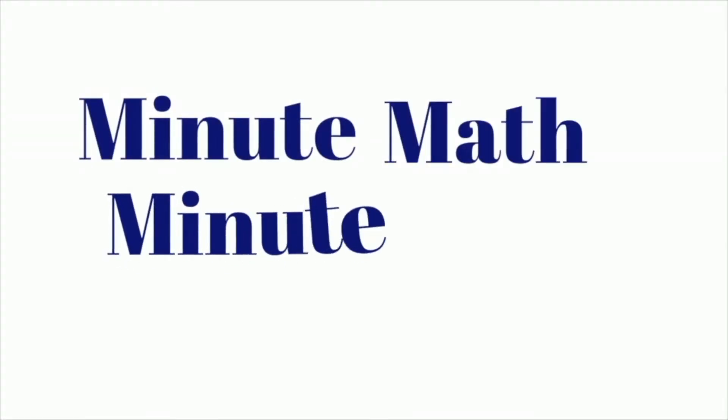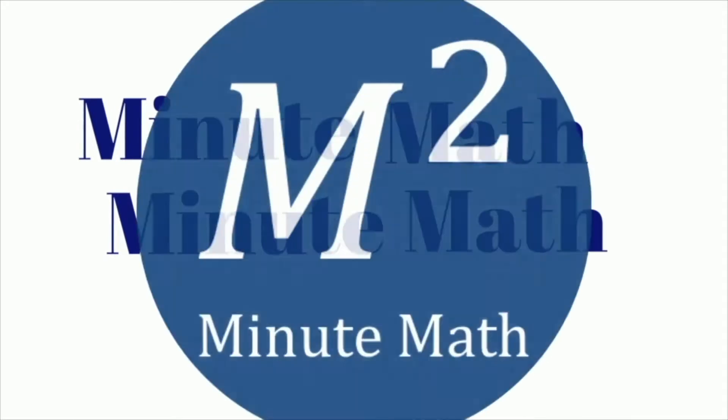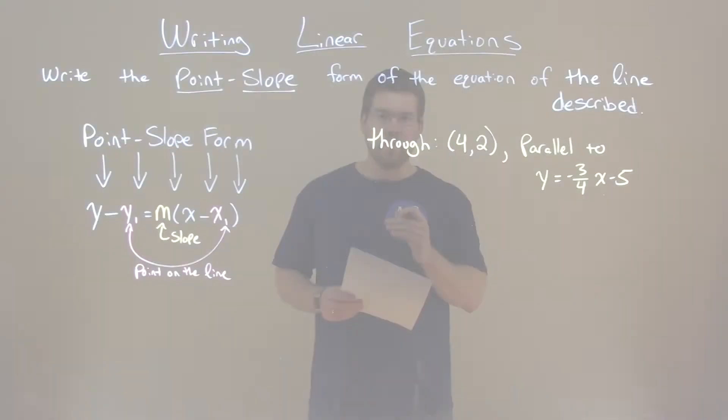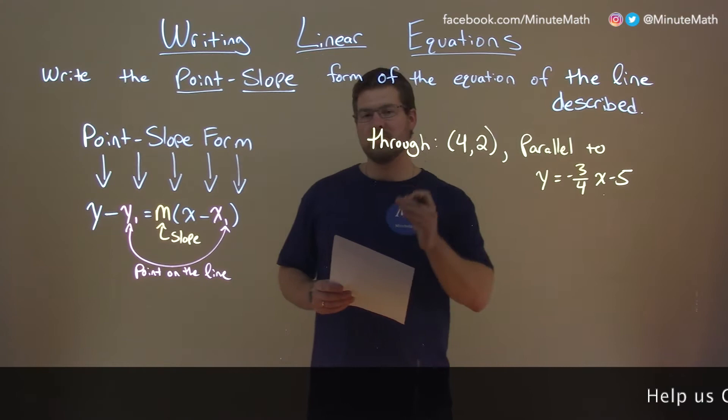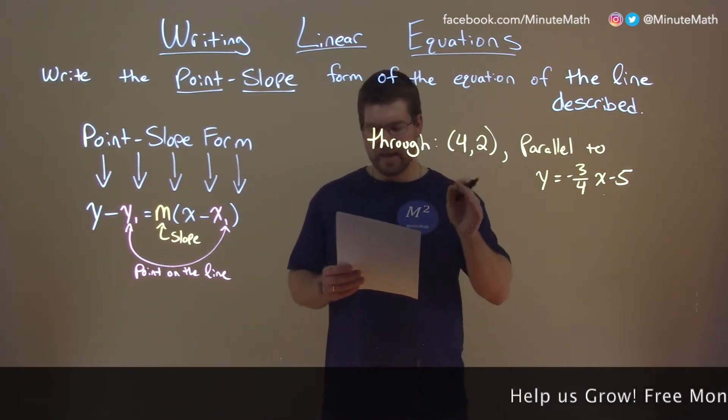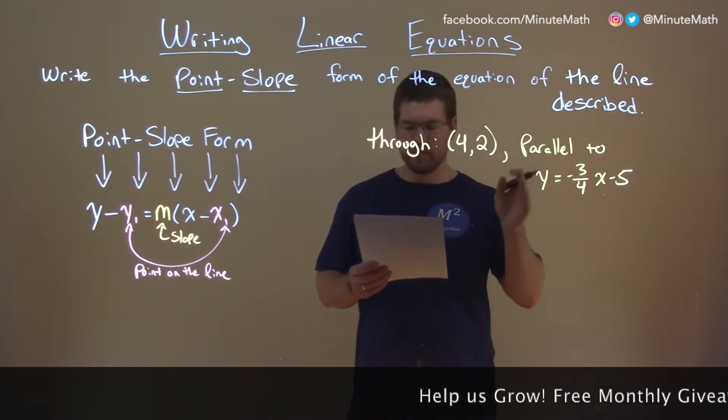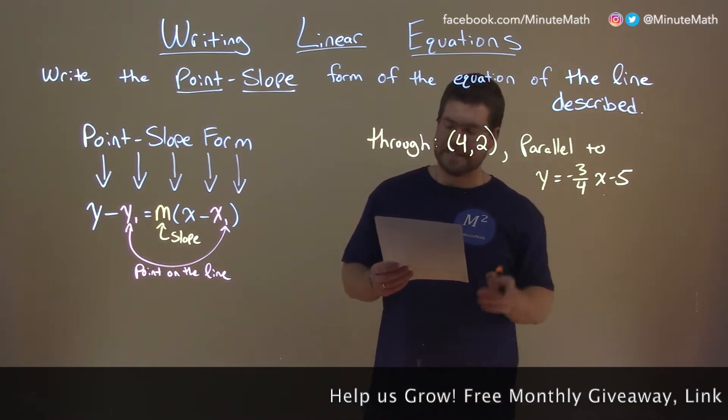Minute Math, Minute Math, when you need help you use Minute Math. So if I was given this problem through (4,2) and it's parallel to y equals negative three-fourths x minus 5.